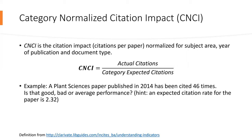A Planetary Sciences paper published in 2014 has been cited 46 times. Is that good, bad, or average performance? If we know the expected citation rate for this paper is 2.32, then this paper's CNCI is 46 divided by 2.32, which equals 19.82 — well above average performance.